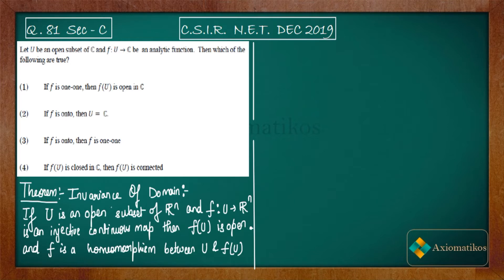The Invariance of Domain theorem states: if U is an open subset of ℝⁿ and f: U → ℝⁿ is an injective continuous map, then f(U) is open. In our case ℂ is just ℝ², so we can apply this theorem. Since f is analytic it is continuous, and since f is given as one-to-one, the image f(U) is open. Therefore option one is true. I again stress: you cannot apply the Open Mapping Theorem here because U is not an open connected set.